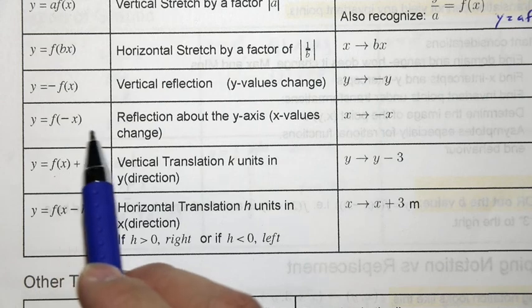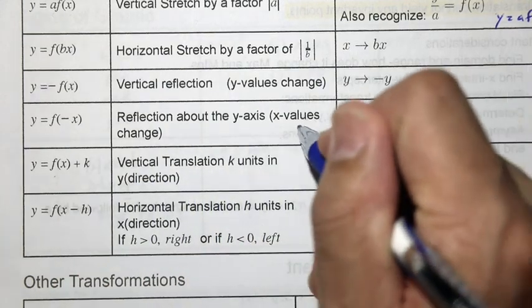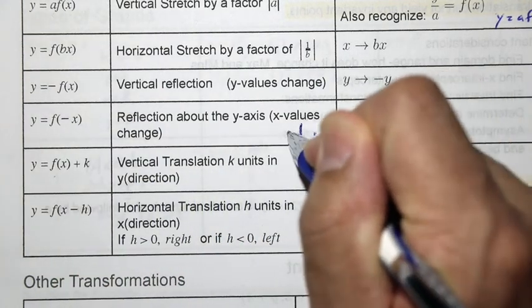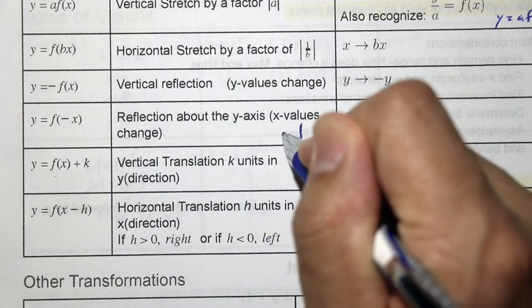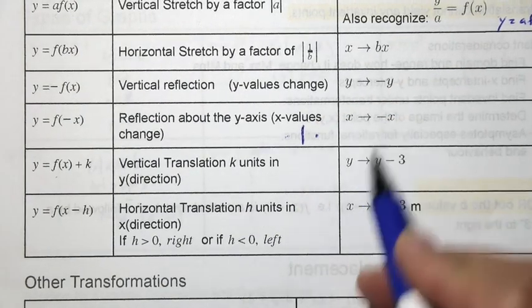If you have y equals f of negative x, that's a reflection about the y-axis. So here is the y-axis, and this would be a reflection from positive x to a negative x, or vice versa. And x is replaced with negative x.